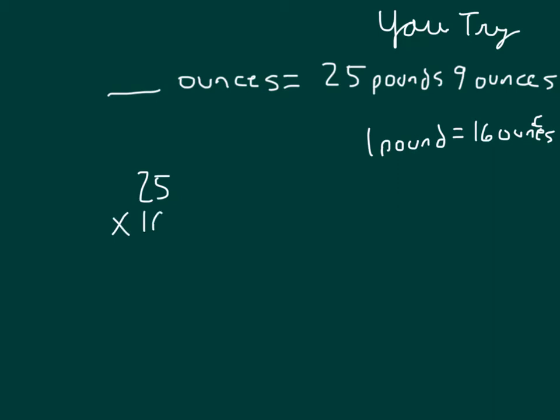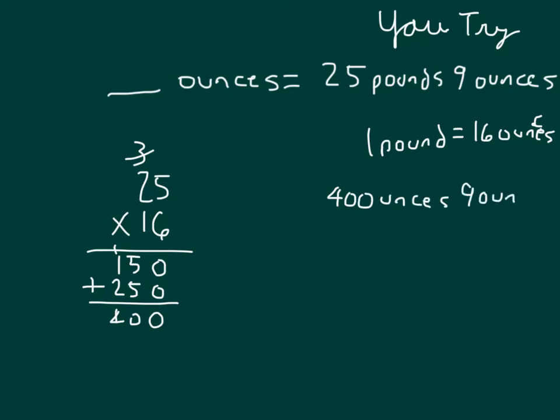Ideally, you used the conversion factor of 16 to multiply 25 by 16. 6 times 5 is 30, regroup of 3. 6 times 2 is 12, plus 3 is 15. Place a 0. And multiply with that 1, which was worth 10. So we have 150 plus 250, which does equal 400. And so that's 400 ounces. And yet we also have still 9 more ounces. If we put those together, because they are like units, and add them, we get 409 ounces. So 409 ounces equals 25 pounds, 9 ounces.